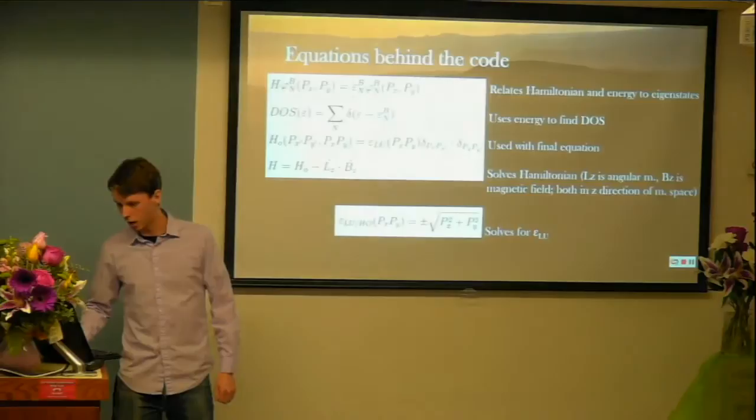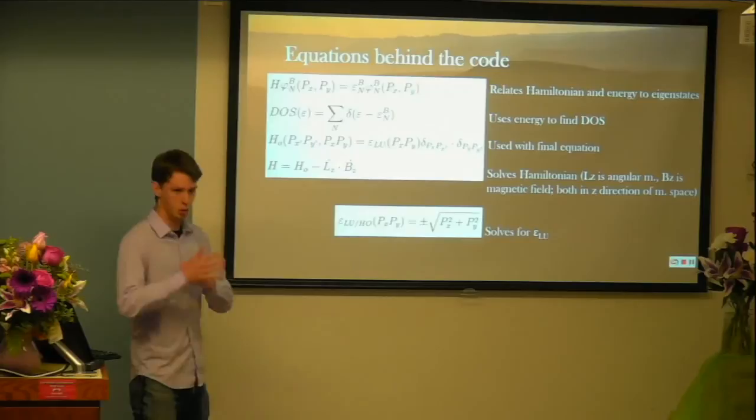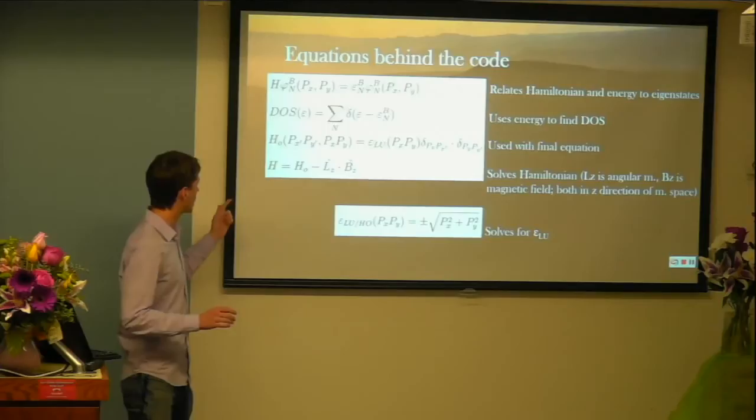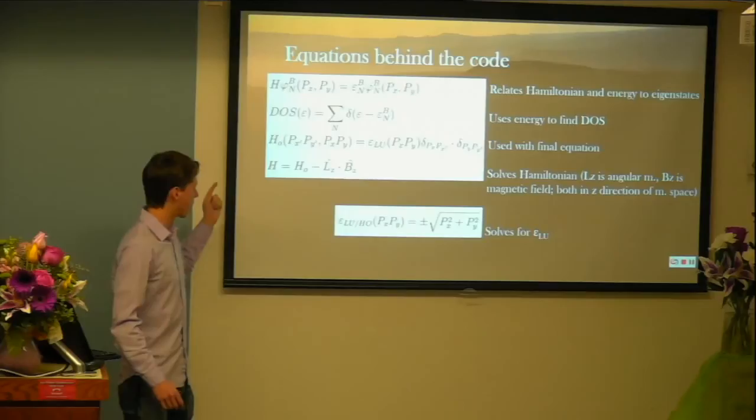And so some equations that were helpful in doing this. This first equation relates the Hamiltonian to energy in the eigenstates. A lot of these are really intertwined, so actually doing this computationally may be incredibly challenging, which is why a code was used. The second equation, we used the energy found in the first equation to find the density of states.